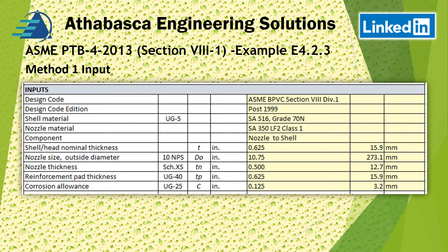Method 1 input: ASME Section 8, Division 1, post-1999. We have SA-516, Grade 70N — a normalized, low-temperature impact steel. The nozzle is also a low-temperature impact steel with exemptions for the design. We have a nozzle-to-head joint with our thickness shown, and a nozzle outside diameter equivalent to a 10-inch pipe — extra strong, so half an inch. We're going to put a reinforcing pad on that, matching the vessel thickness, which saves on materials and is preferred by fabricators.